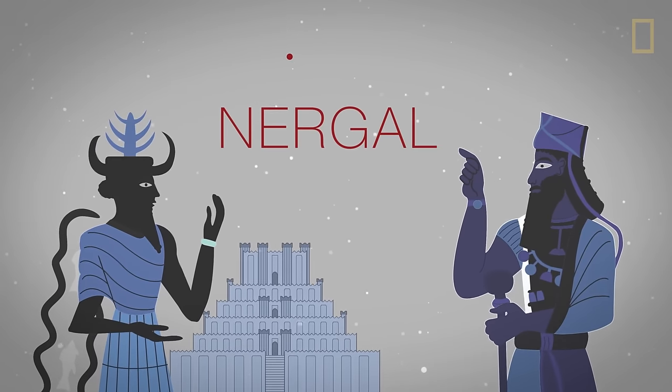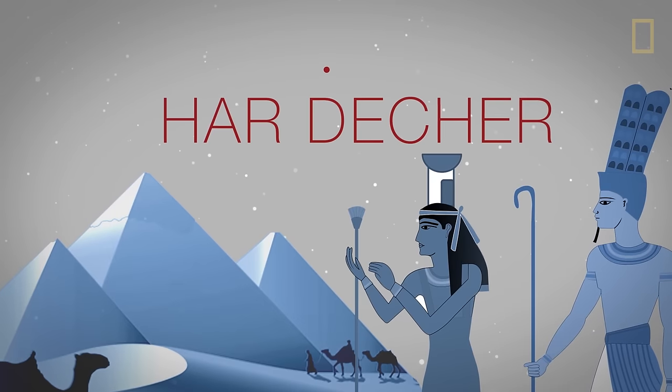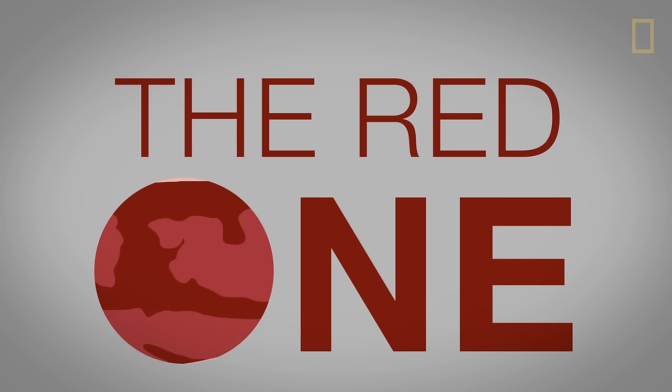The Babylonians called it Nergal, the Hindus called it Mangala, the Egyptians called it Hardikar, or the Red One, and today we know it as the Red Planet.